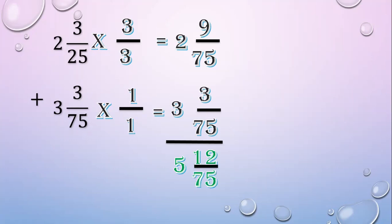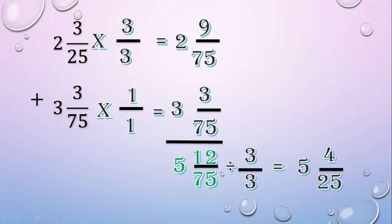Then express the answer in lowest terms. 12 and 75 have a common factor of 3. So divide by 3. Copy the whole number, then divide the numerator: 12 divided by 3 equals 4. Then divide the denominator: 75 divided by 3 equals 25. So the final answer is 5 and 4 over 25.